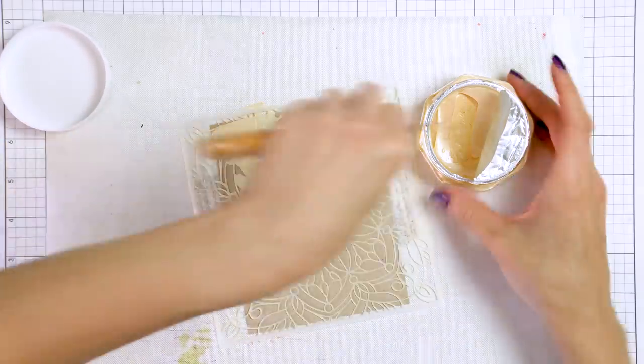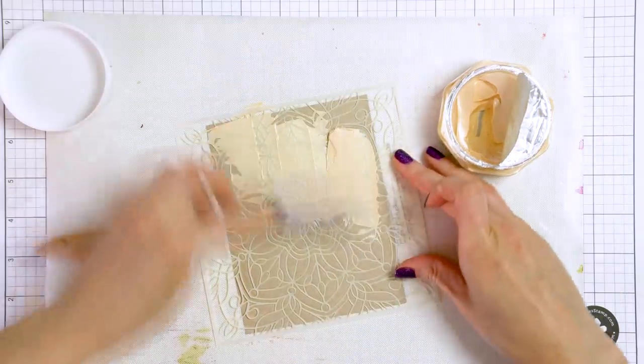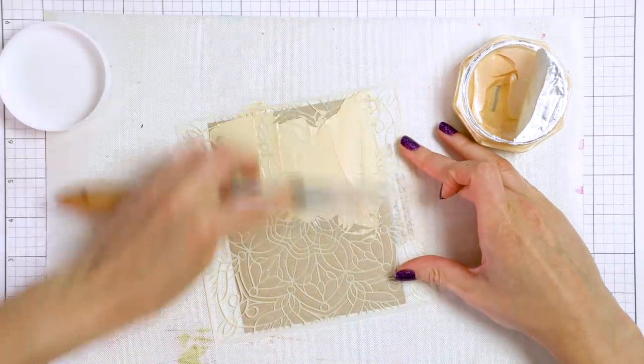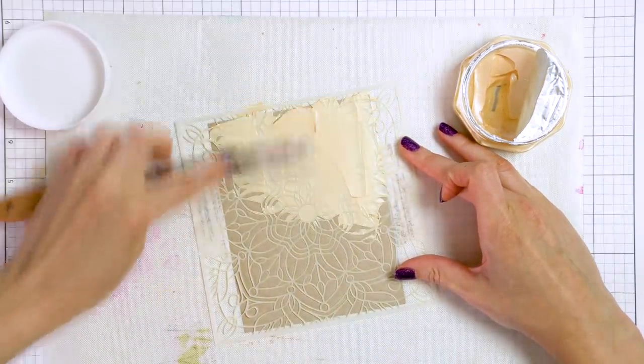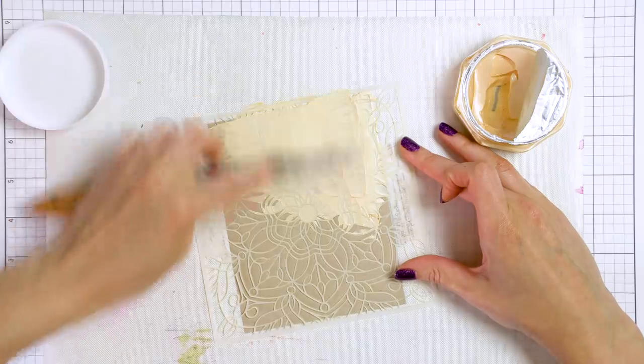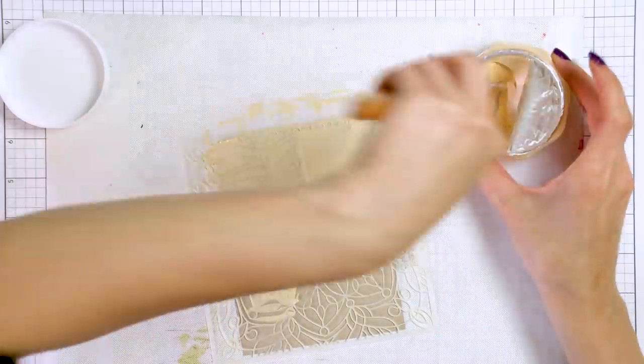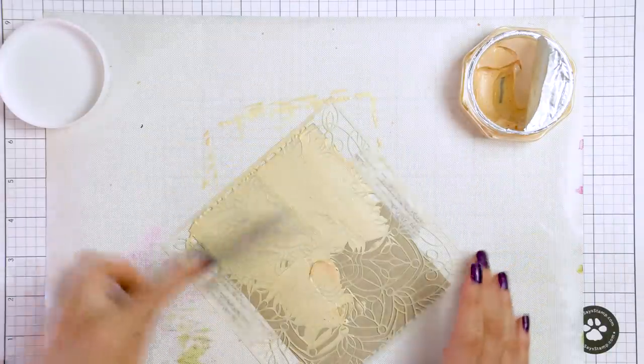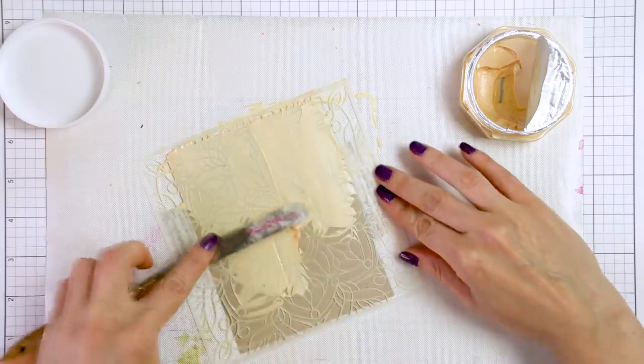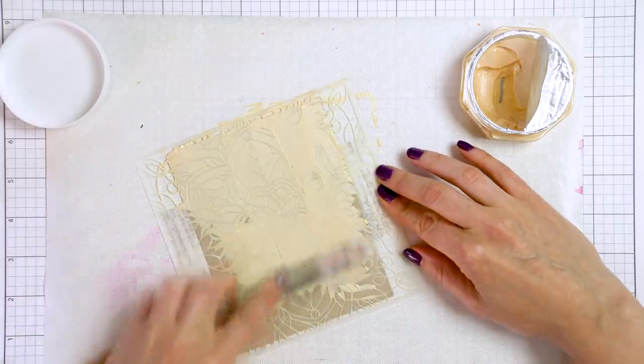This is color Ivory Coast. On the back of the jar, there are some instructions and the instructions read as follows. For a textured finish, apply with a spatula. If applied using a stencil, a raised effect will occur. This is what we're doing here. We are applying this mousse using a stencil.